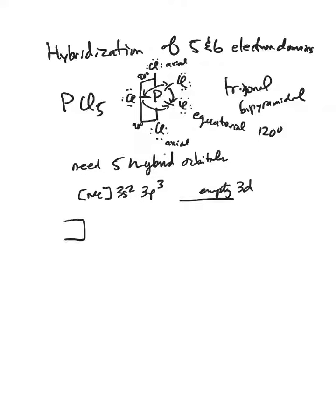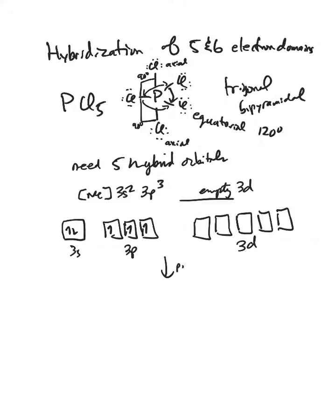So we're going to take the 3s, the 3p, and these empty 3d orbitals. The two electrons in the 3s2, electron in each of the 3p orbitals. We're going to promote an electron from the 3s up to one of the 3ds. It takes a little bit of energy to do that, to unpair it. And then we gain that energy back as we hybridize.